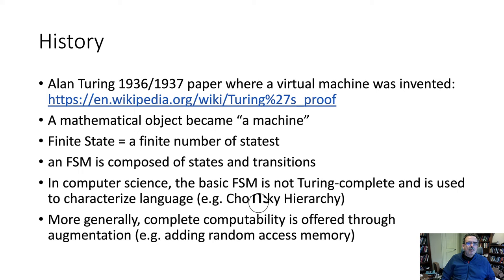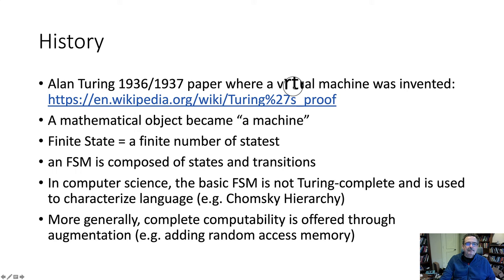This shows that a mathematical object became a machine — that's the linguistic result of Turing's paper. And with some minor modifications, the state diagram or state machine can be as powerful as anything else we have in computing and programming.